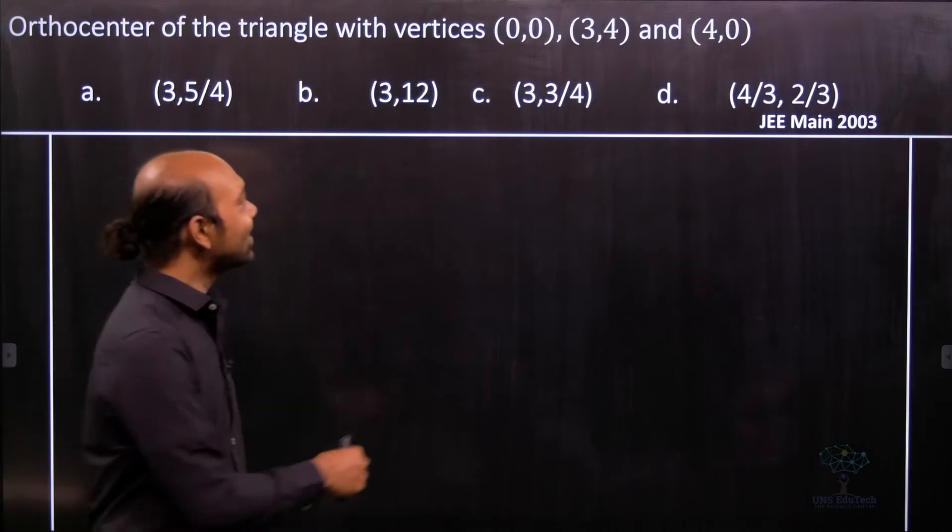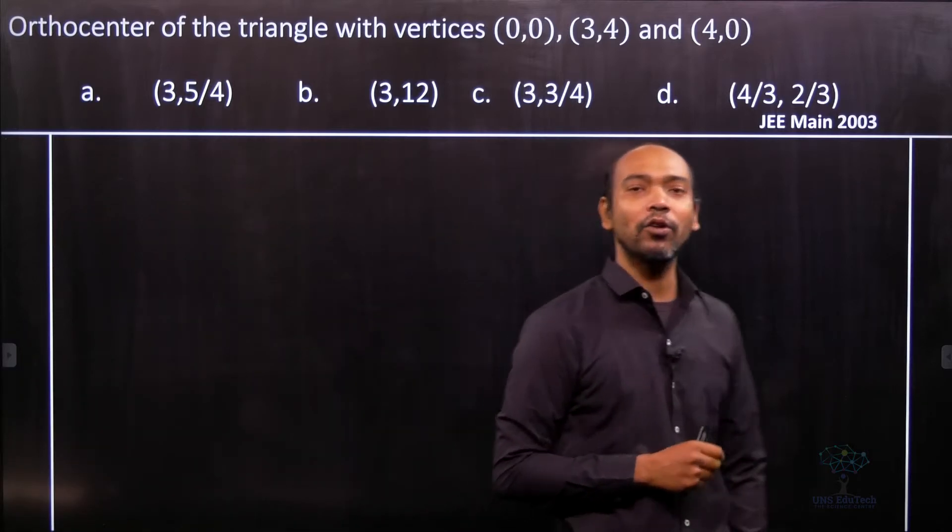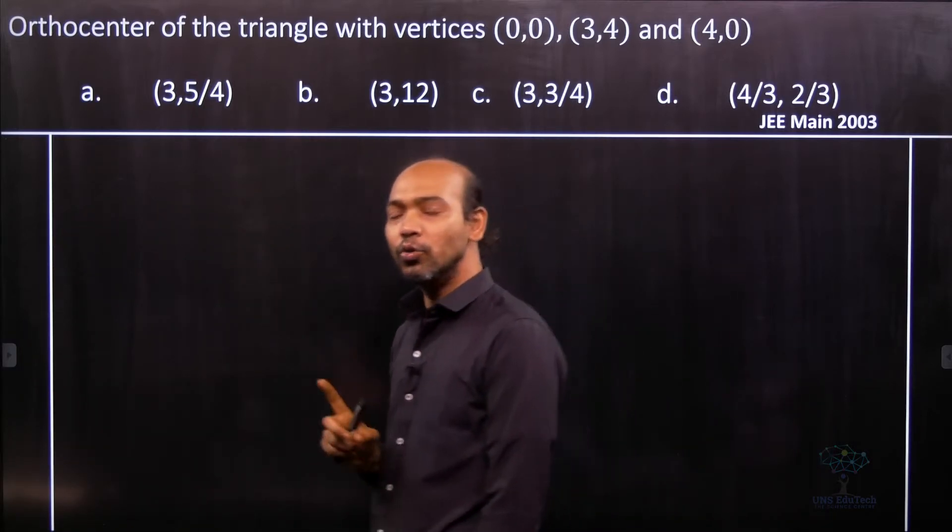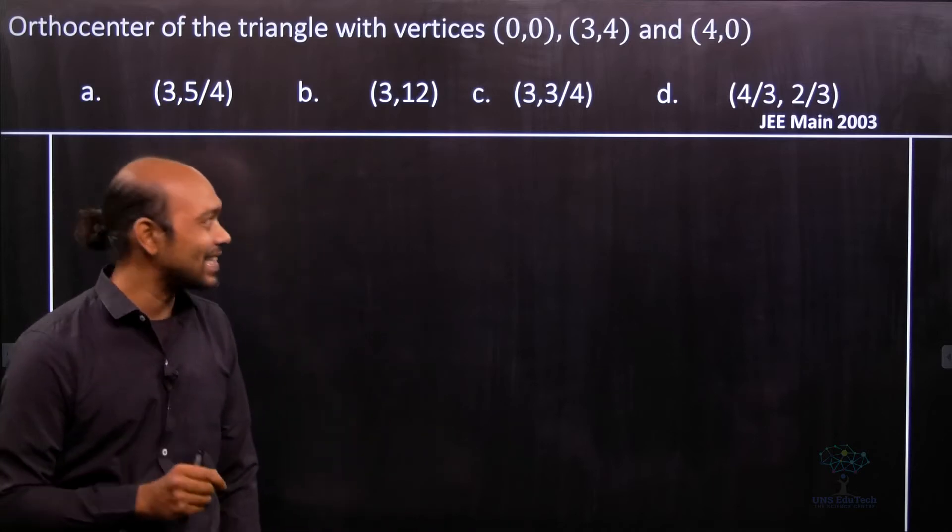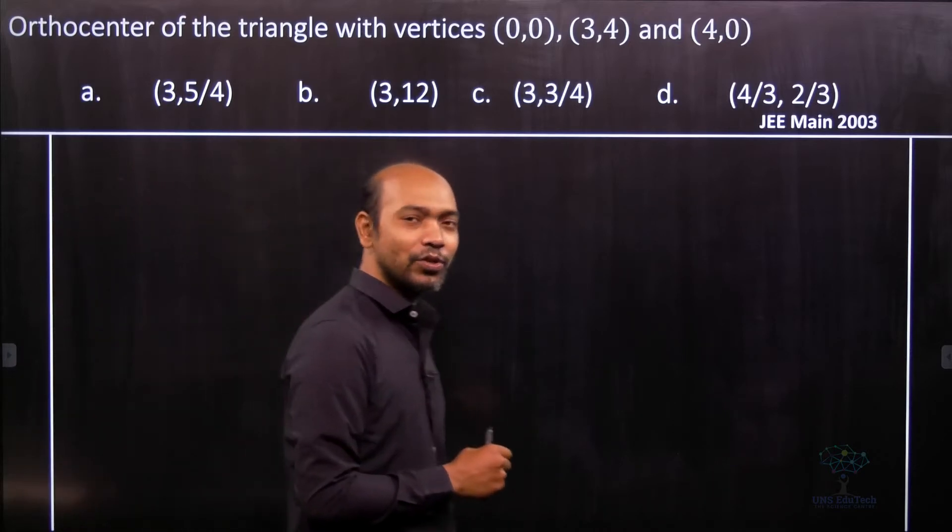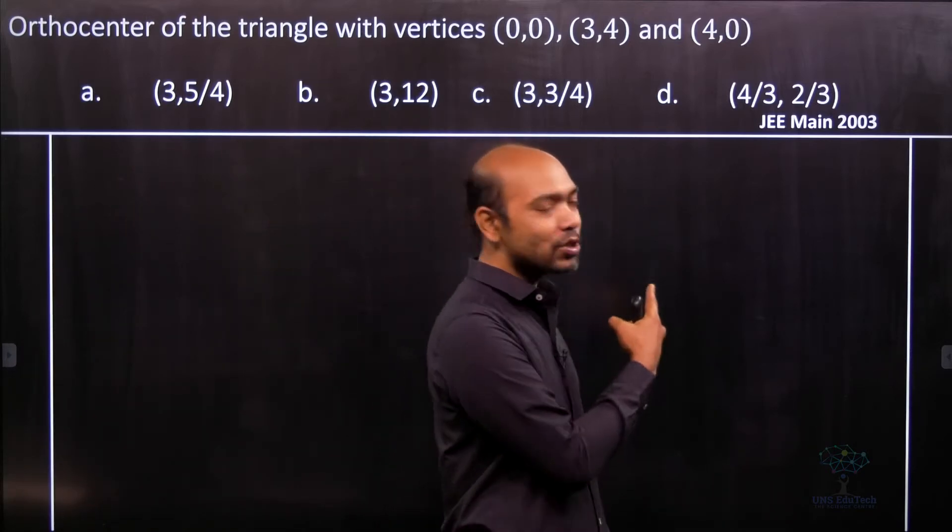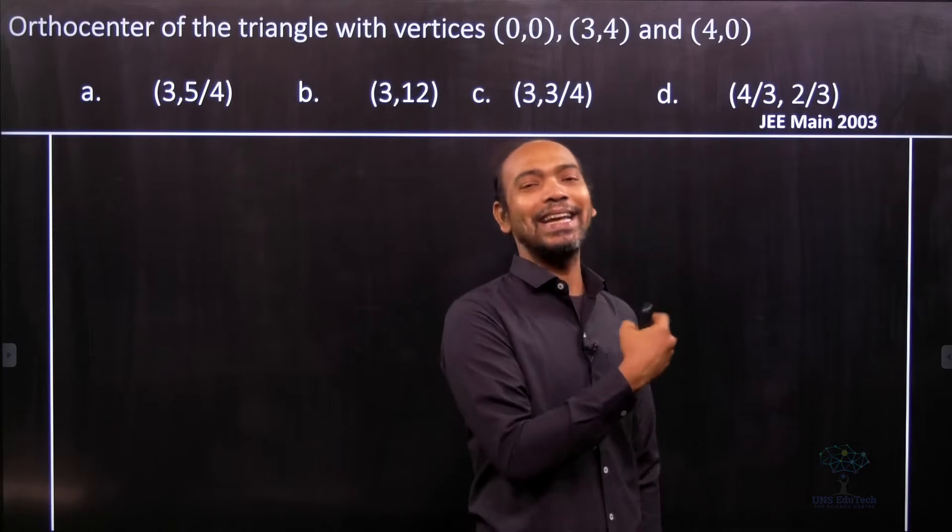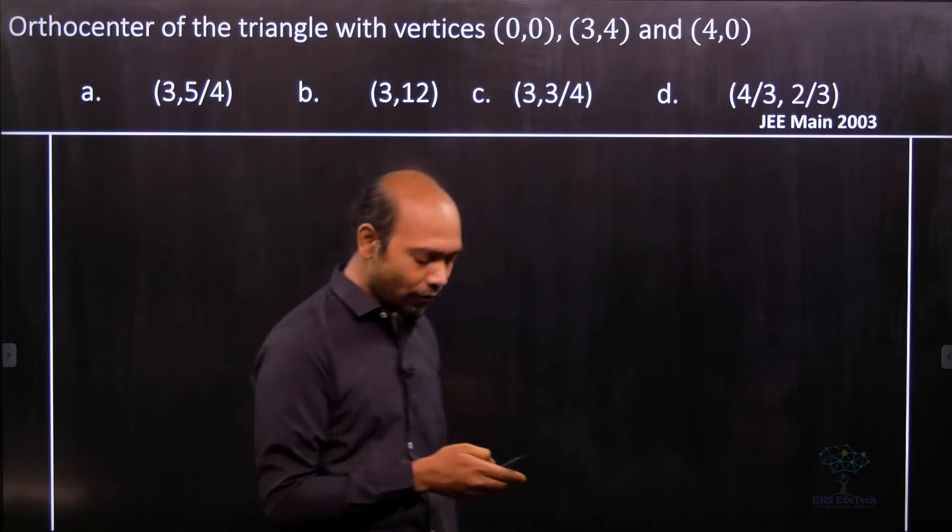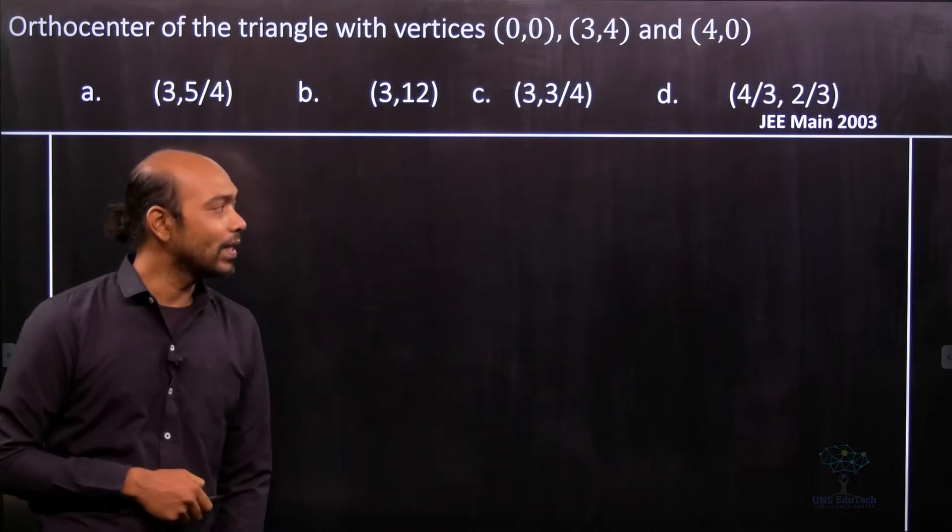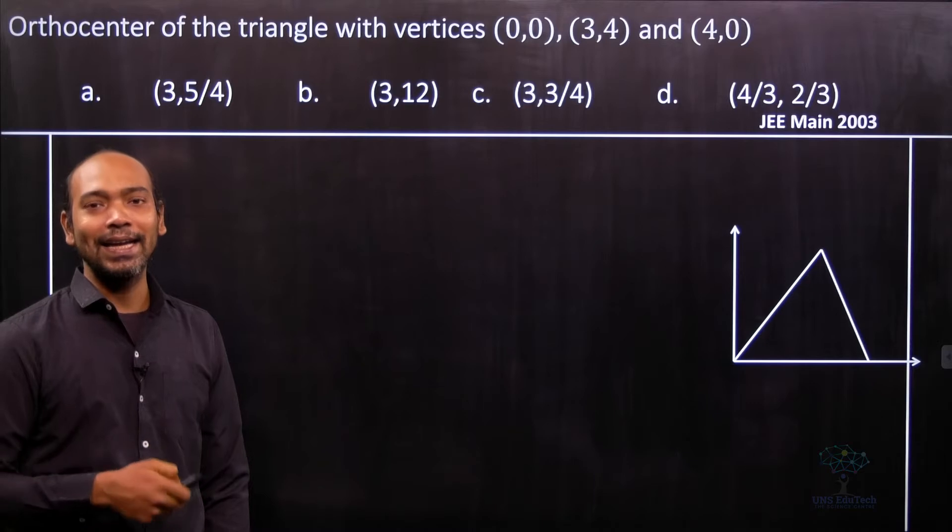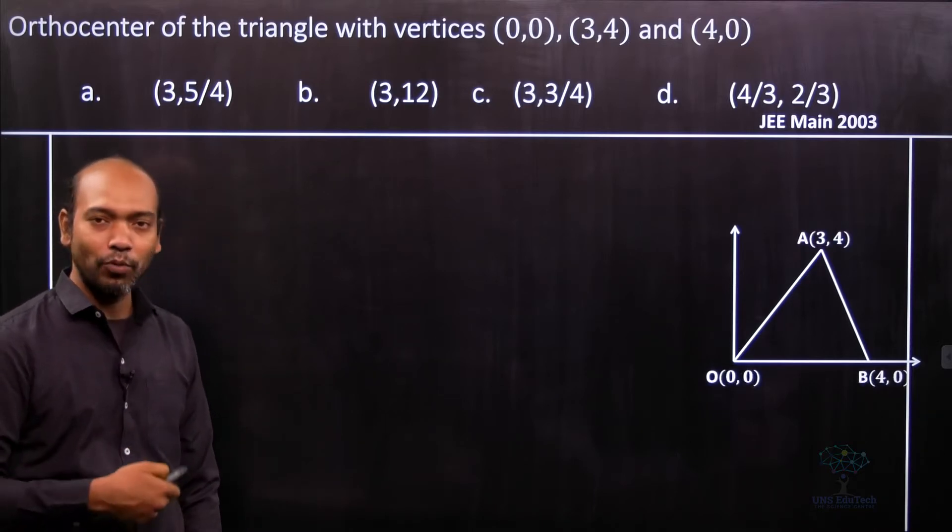So let's go ahead. See that it's a special triangle. Why I call it a special triangle? You see that two vertices lie on the x-axis. Why? One is 0,0 obviously the origin and the next coordinate is 4,0. Again it lies on the x-axis. So therefore let us draw the figure. So you can see that if we draw the x-axis and y-axis and put appropriate points.